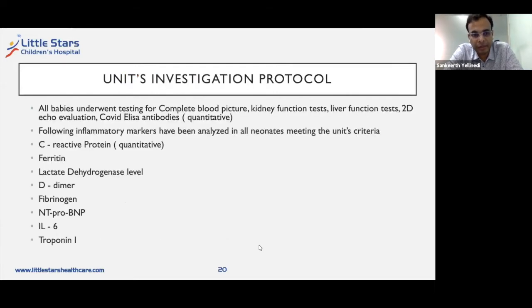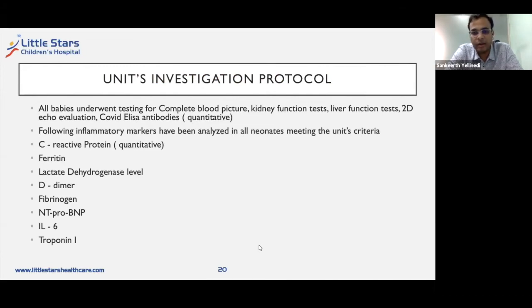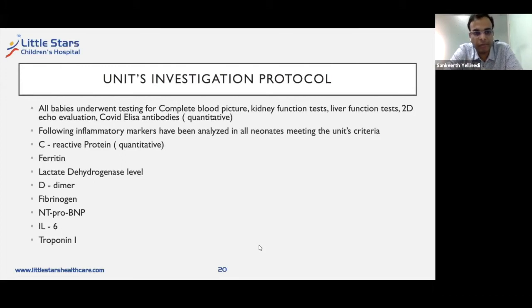In our unit, we had an investigation protocol. All babies underwent testing for complete blood picture, kidney function test, liver function test, echocardiographic evaluation, and quantitative ELISA antibodies for COVID. All inflammatory markers were estimated, including CRP, ferritin, LDH, D-dimer, fibrinogen, pro-BNP, IL-6, and troponin-I.